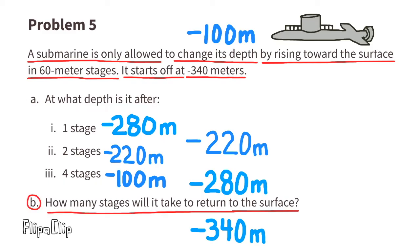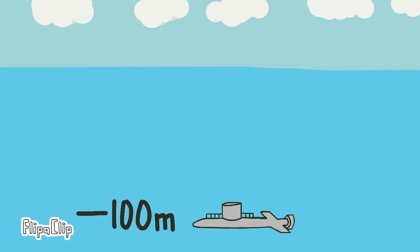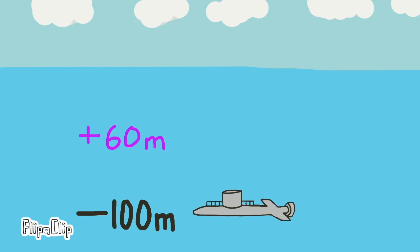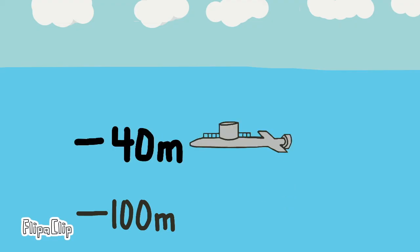Part b: How many stages will it take to return to the surface? Well, after four stages it's located 100 meters below the surface, so let's start there at negative 100 meters. One more stage would be negative 100 plus 60, that equals negative 40 meters.